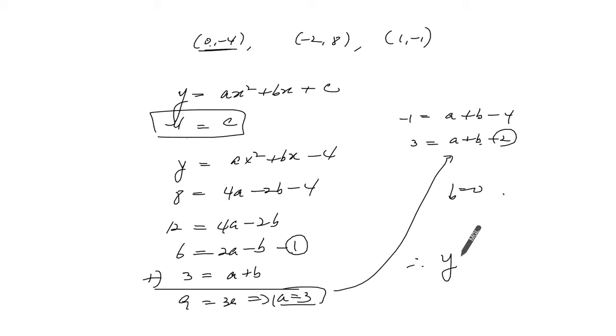So our equation is y = 3x² - 4. The location of the vertex is (0, -4).